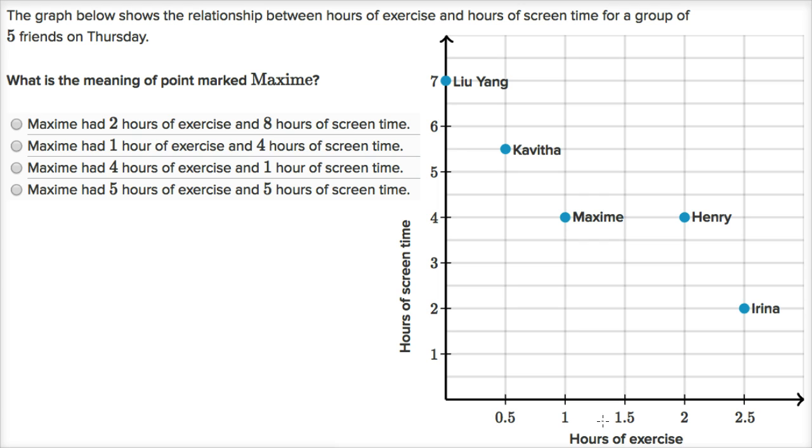Half an hour, one hour, one and a half hours, two hours, two and a half hours, and then here it shows hours of screen time. For example, it looks like Liu Yang did zero hours of exercise, did no exercise, and spent seven hours in front of a screen. Not something that I would recommend.